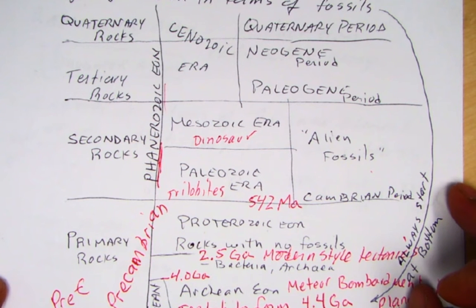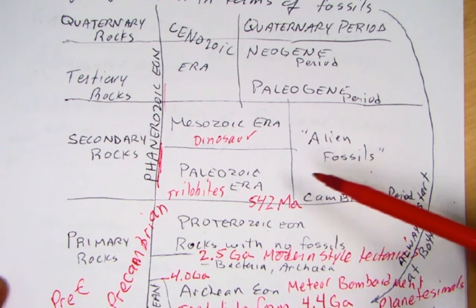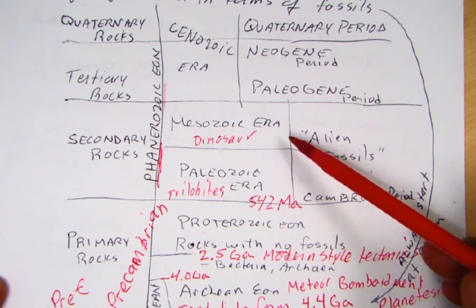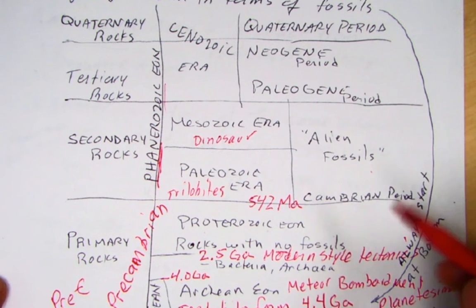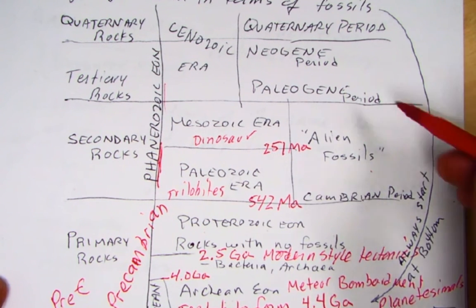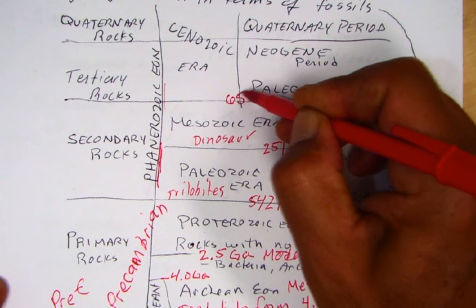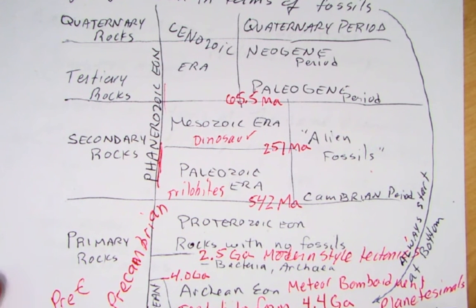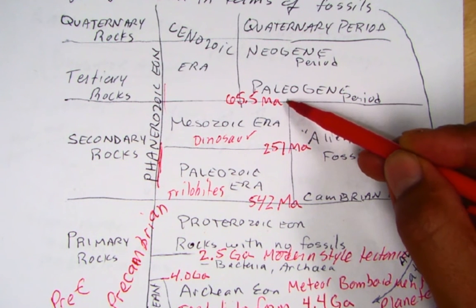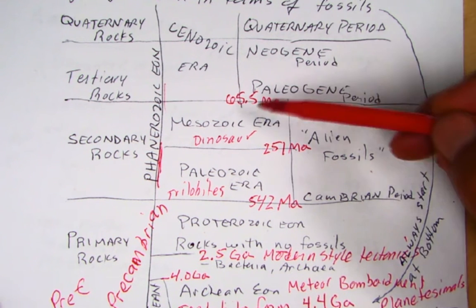The eras are based primarily on life and extinction events. We have the Paleozoic, sometimes called the Age of Fishes, with many different fish species; then the Mesozoic, the Age of Reptiles; and the Cenozoic, where mammals dominate. The boundary between the Paleozoic and Mesozoic is about 251 million years ago. The boundary between the Mesozoic and Cenozoic is around 65.5 million years ago, well-dated from volcanic ashes and debris from the asteroid impact that finished off the dinosaurs, though many species had already gone extinct.